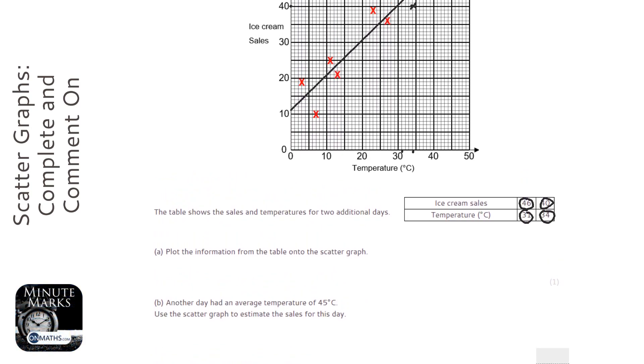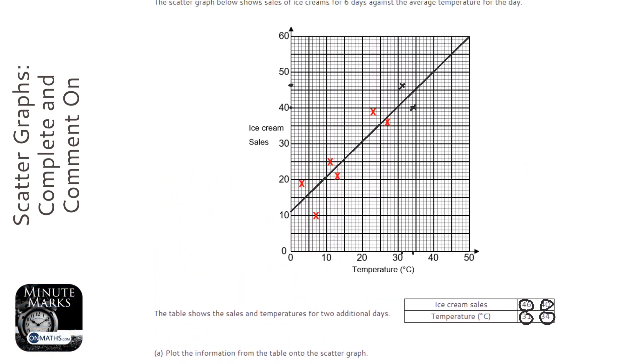We've got an average temperature of 45 degrees, so we're going to draw a line up from 45 degrees, which is about there. Oh, the lines didn't come up, so let's draw that line there. It's refusing to come up for some reason. Let's try another one. Okay, let's do it the old-fashioned way.